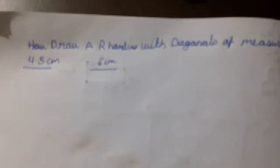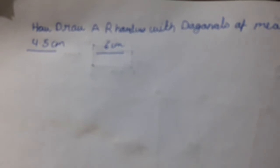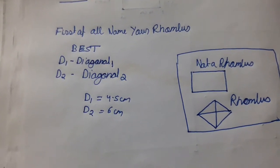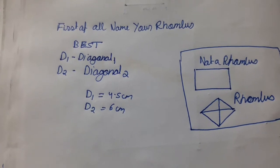Hi guys, we are going to draw a rhombus with diagonals of measure 4.5 cm and 6 cm. First of all, you have to name your rhombus. I named it BEST because it's going to be the best rhombus ever.